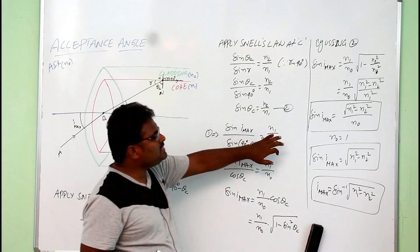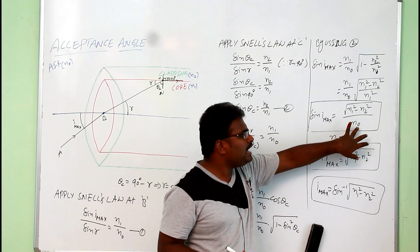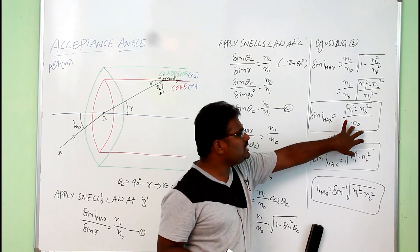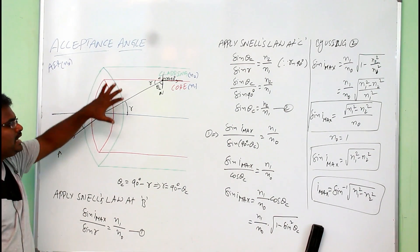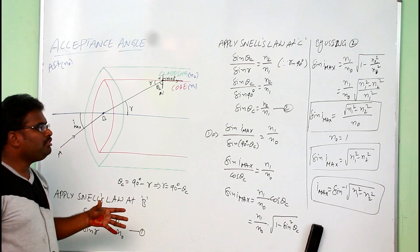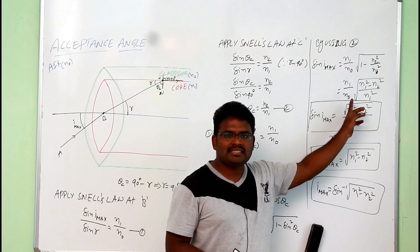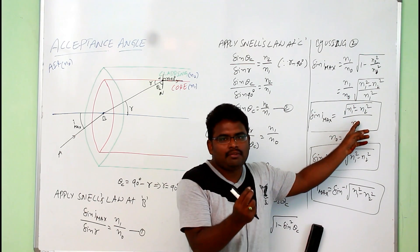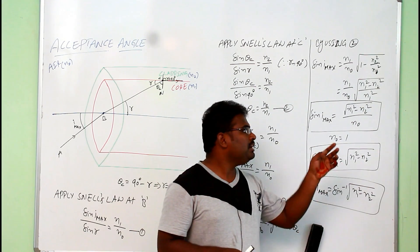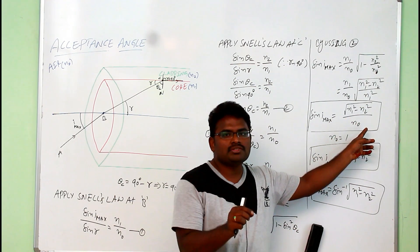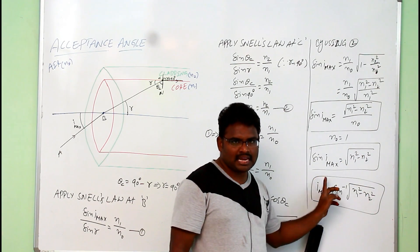The full formula is: N0 × sine(i_maximum) = under root of (N1² − N2²), where N0 is the refractive index of the surrounding medium. If you immerse the entire optical fiber in water, you have to write: sine(i_maximum) = under root of (N1² − N2²) divided by the refractive index of water. Similarly, if you immerse it in benzene, you take the refractive index of benzene. This is the complete expression for the acceptance angle.